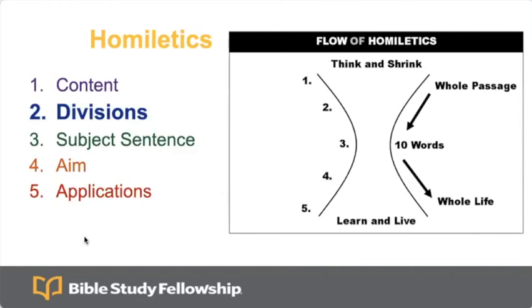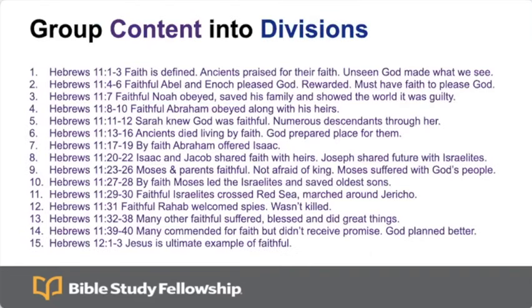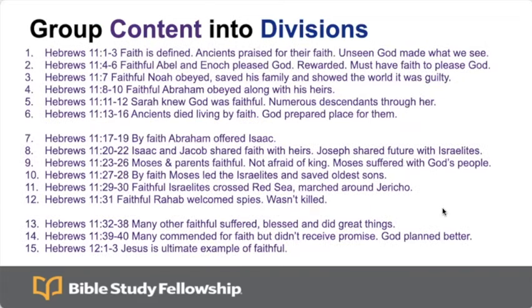Second, division sentences. These are going to be complete sentences, but still just the facts. We're going to do two, three, or four summary sentences of the content. I'm not going to go back and look at my passage at this point — I'm going to look at my content list and try to create three divisions. I might look at my Bible headings to see where the content is divided, or just look at where I can group things. In this case, I grouped them into three divisions.